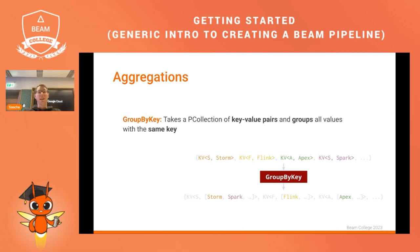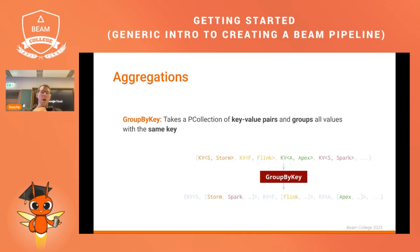Another type of aggregation transform is GroupByKey, where you have key-value pairs as input and want to group all values together that share the same key. In the example, you have four words with their first letter as the key. After applying GroupByKey, you end up with S holding Storm and Spark, F holding Flink, and A holding Apex.